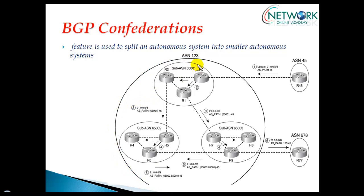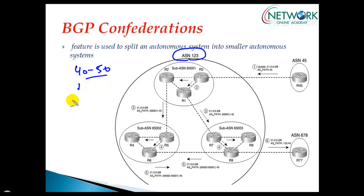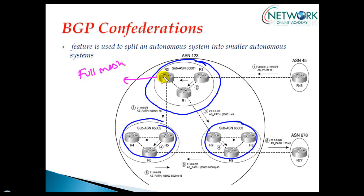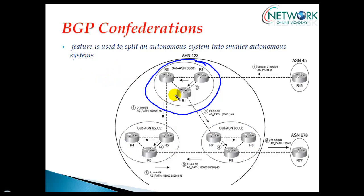In my example, AS 123 is acting as the service provider AS number, with more than 40 to 50 routers inside. You can still use route reflectors, but you would need more servers and clients. Instead, what we can do is divide them into multiple sub autonomous system numbers — making a group of sub-AS inside that main AS. Inside each sub-AS you can have either a full mesh or route reflector, managing one big AS into multiple sub-AS numbers.